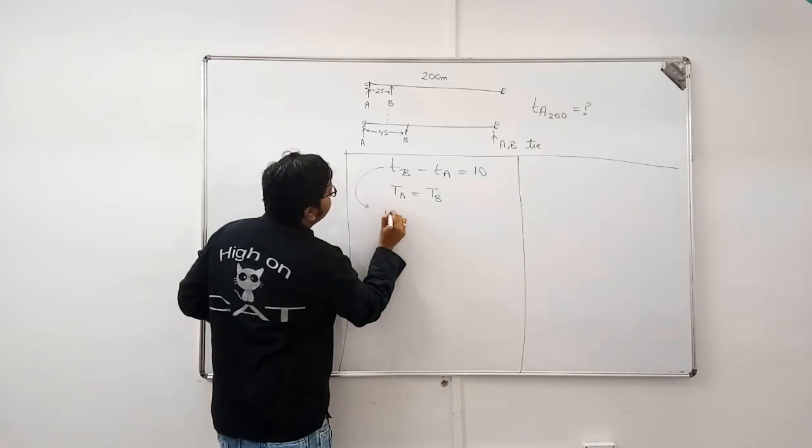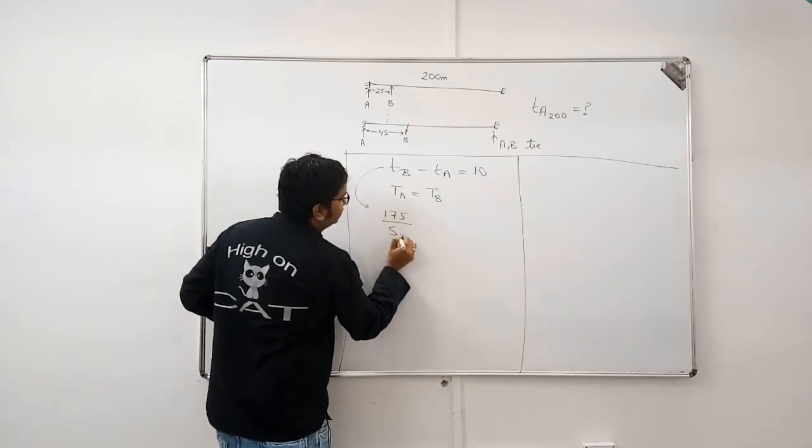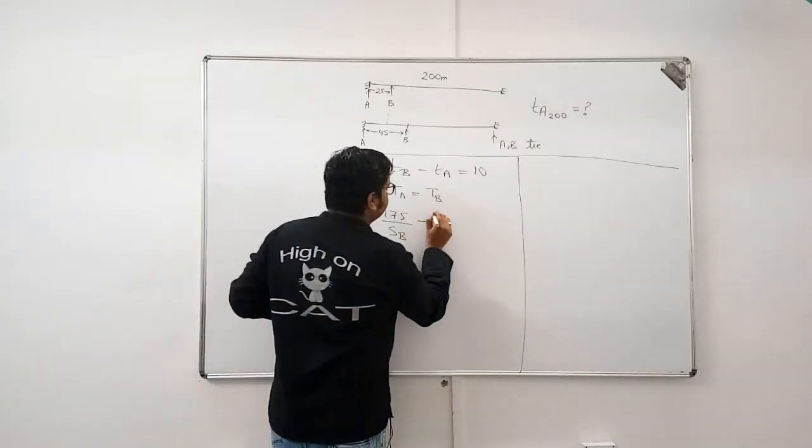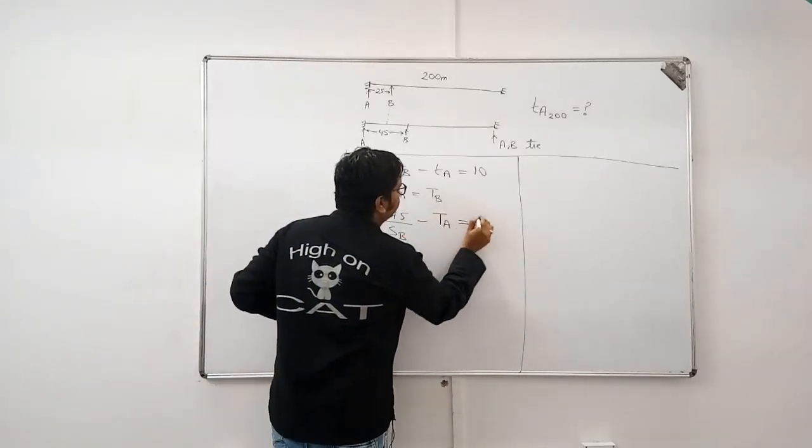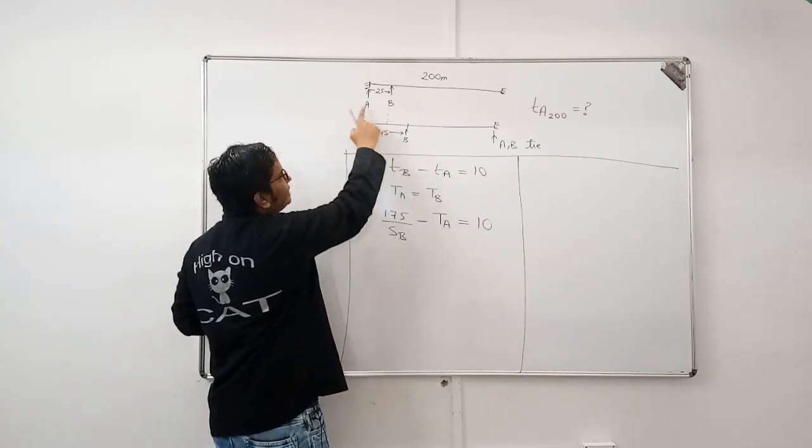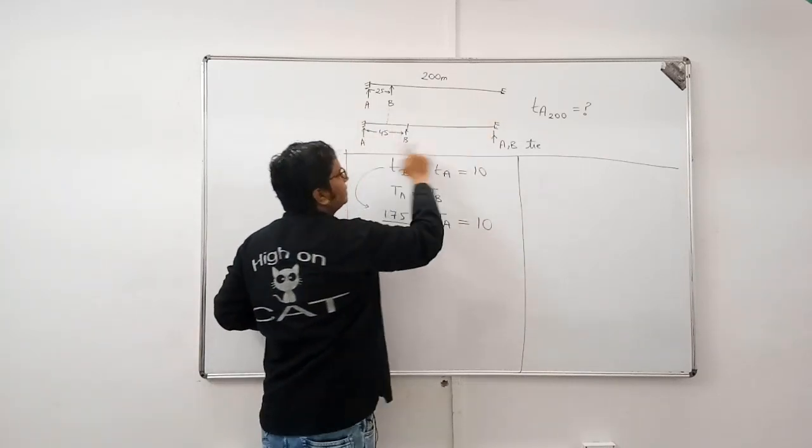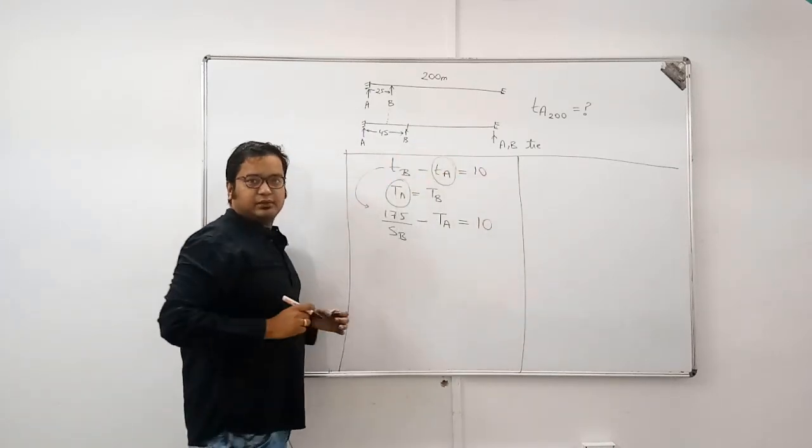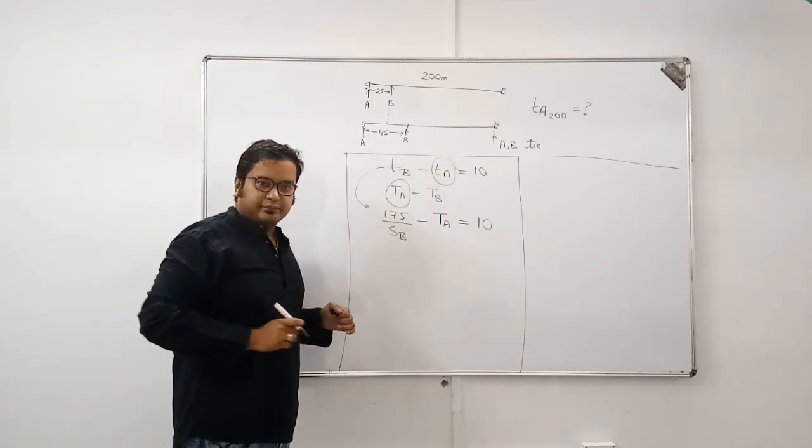TB is given by 175 divided by speed of B. Time is distance by speed. Minus TA is equal to 10. Now, I have made these two same, because time taken by A in both the cases will be same. Because, in both cases, A is running 200 meters.